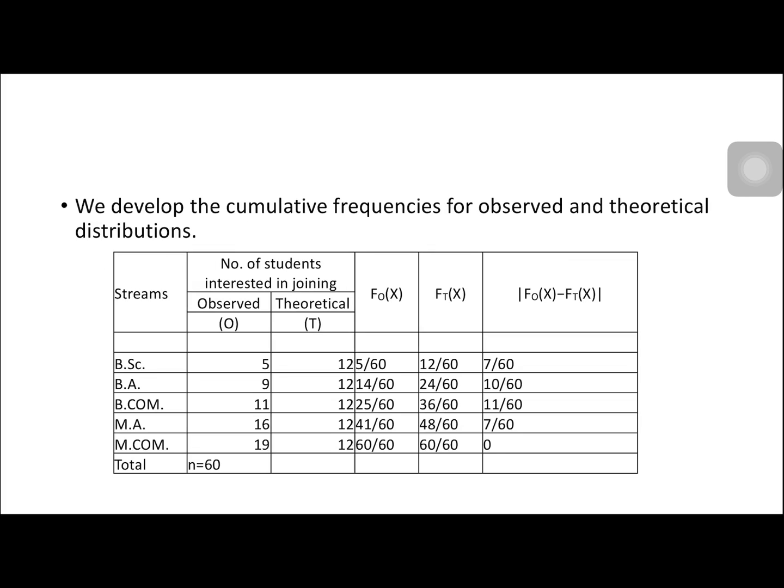Next, we develop the cumulative frequencies for the observed and theoretical distribution. So we have here our observed values and our theoretical values. Again, this 12 came from a total of 60 divided by 5 streams that is equal to 12.